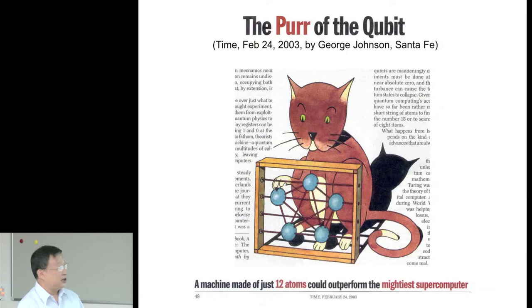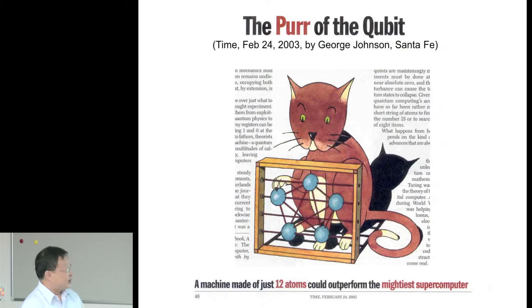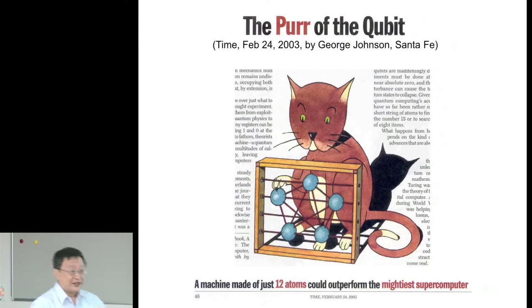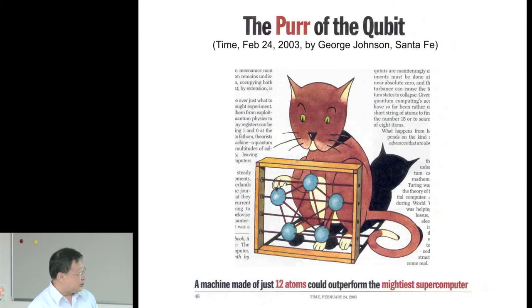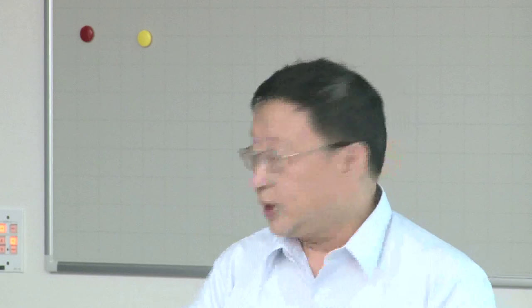You've all heard of Schrödinger's cat — so just say 'Schrödinger's cat doing computation.' You can see the picture: a machine made of just 12 atoms could outperform the mightiest supercomputer. Quantum computation gets people so excited because of its exponential speedup as the number of qubits increases.